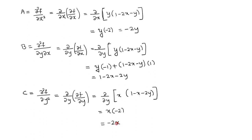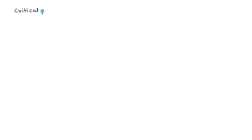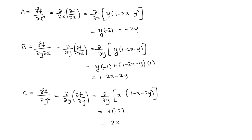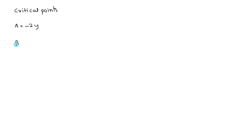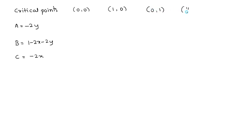With these second-order derivatives, we evaluate at each critical point in tabular form. A = -2y, B = 1 - 2x - 2y, C = -2x. At (0, 0): A = 0, B = 1, C = 0, so ac - b² = 0 - 1 = -1 < 0. At (1, 0): A = 0, B = -1, C = -2, so ac - b² = 0 - 1 = -1 < 0.